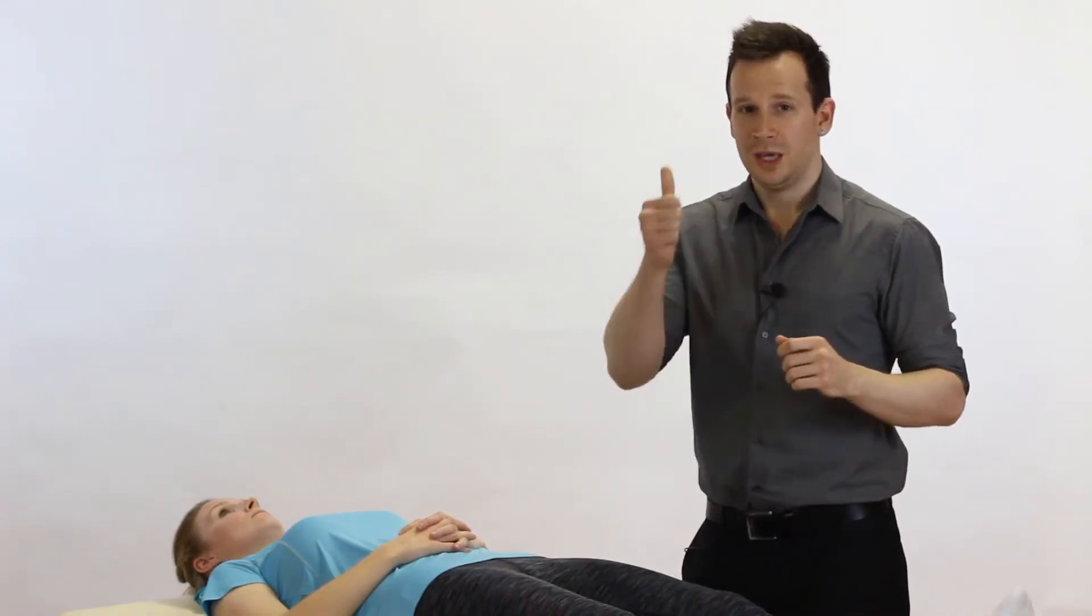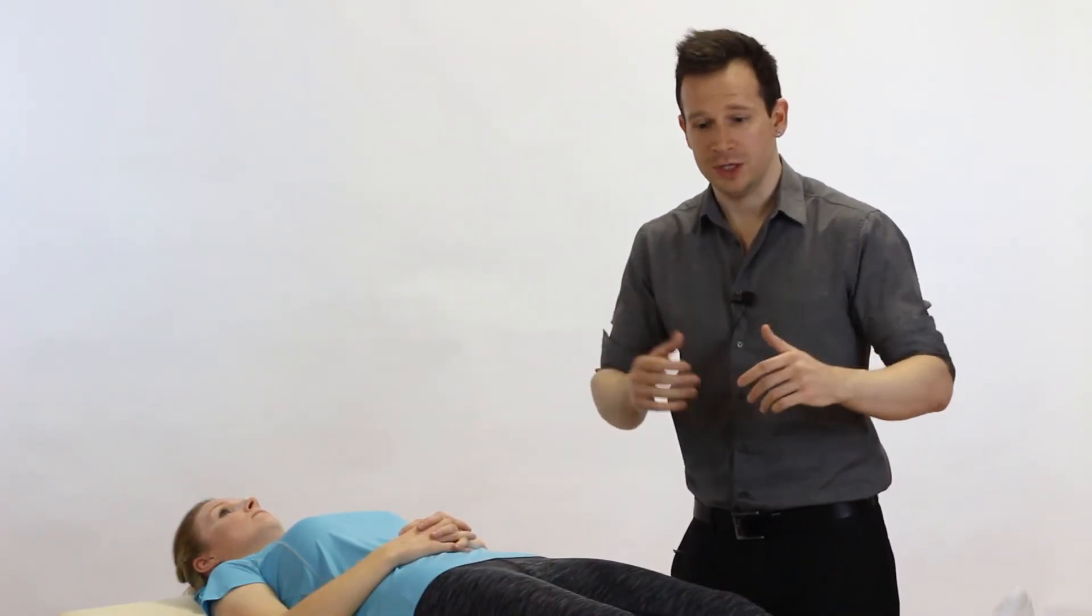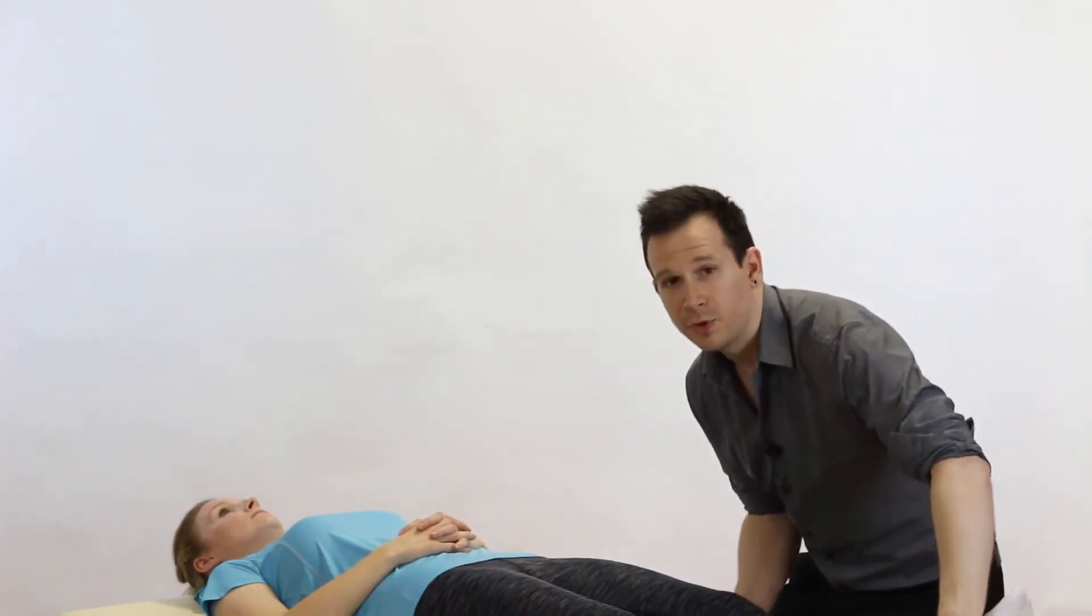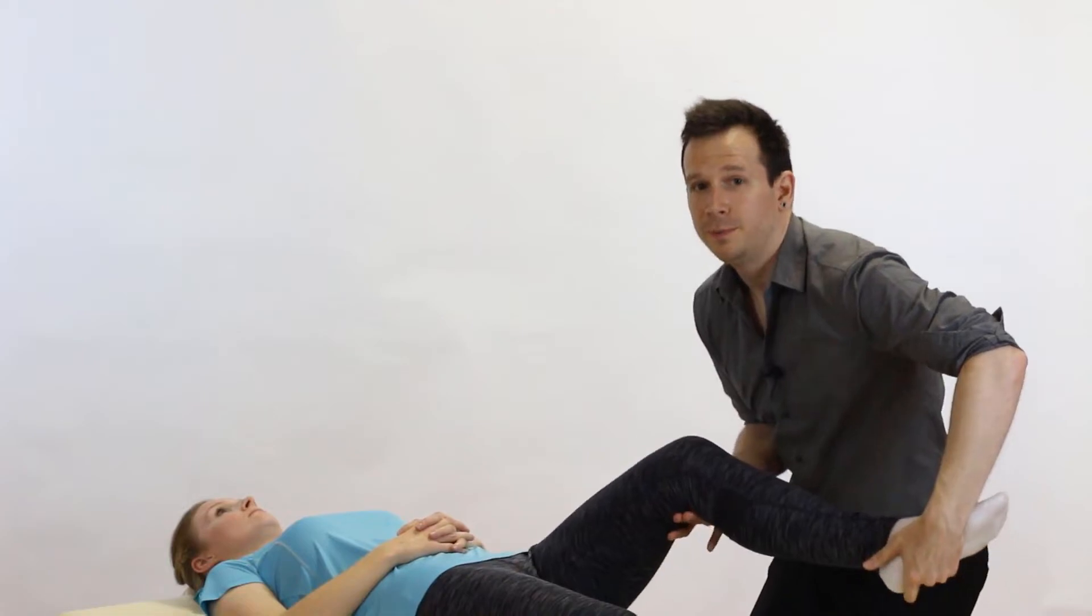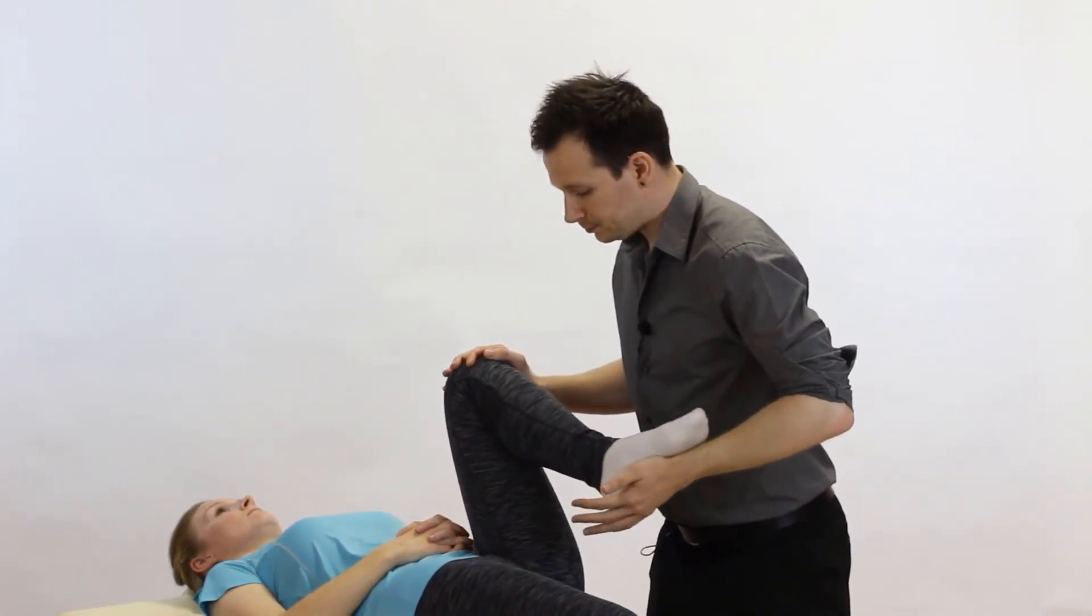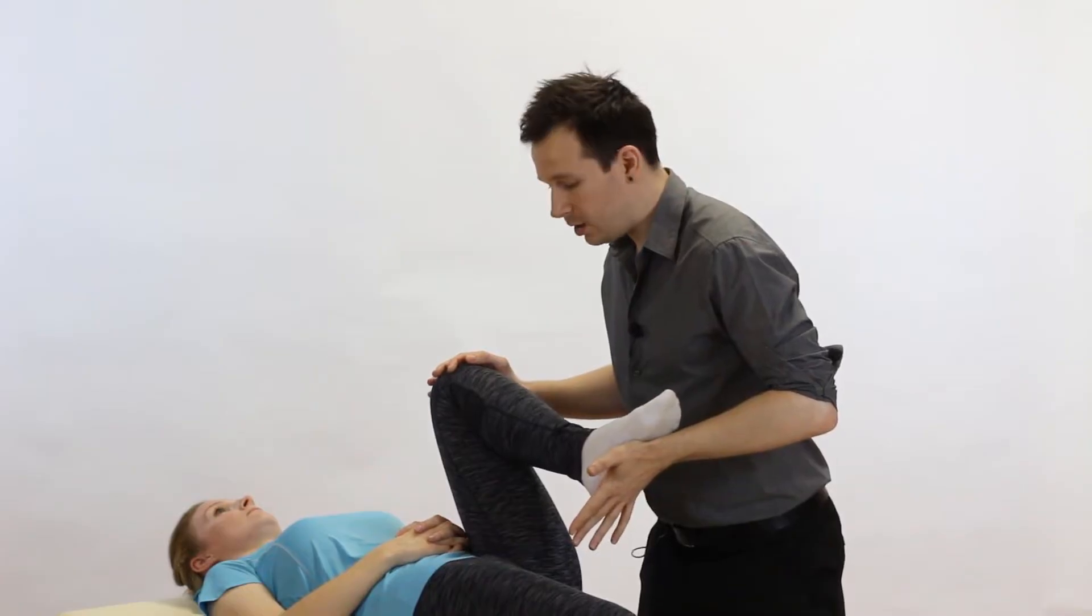So with all that said, let's recap: we're thinking inside the hip, we're thinking clunking or reproduction of the patient's pain. Great, how do we do it? There's two versions. First one, we're going to bring the hip up into full passive flexion, pain permitting from the patient.